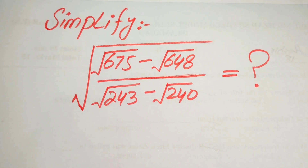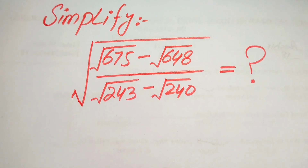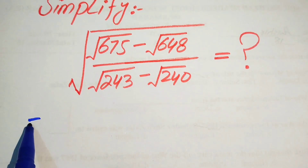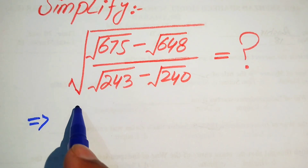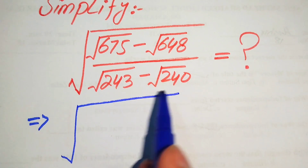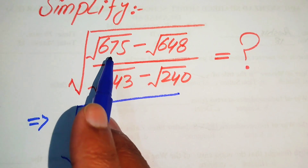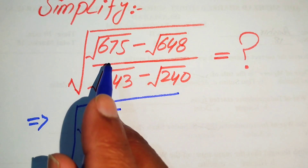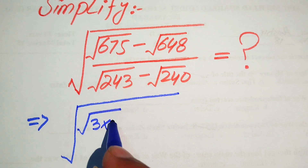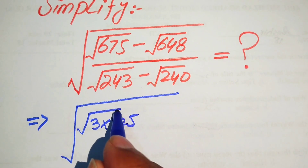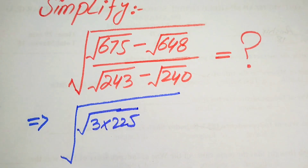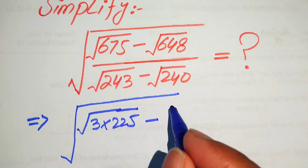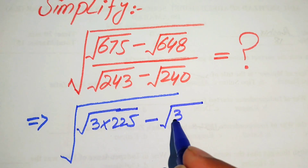We write this into simplified form. Here we first focus on these four terms. The first term is 675 — when we multiply 3 by 225 we get 675. For 648, we write it as 3 times 216.